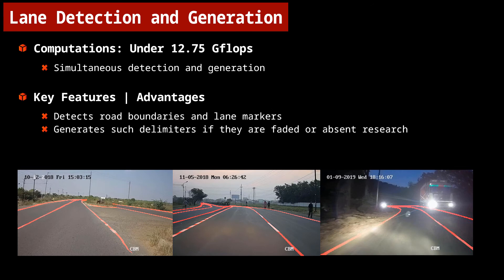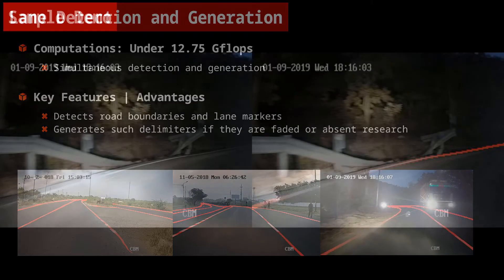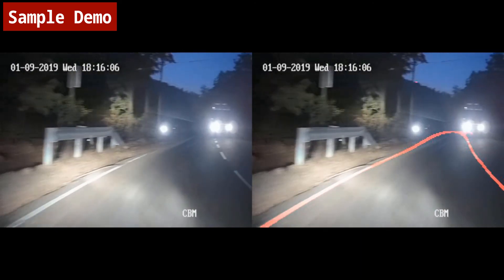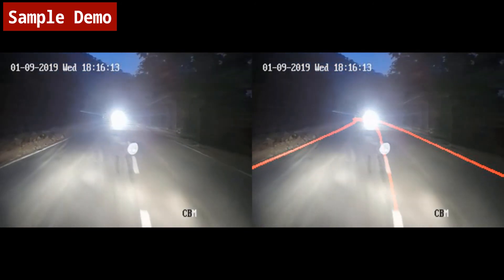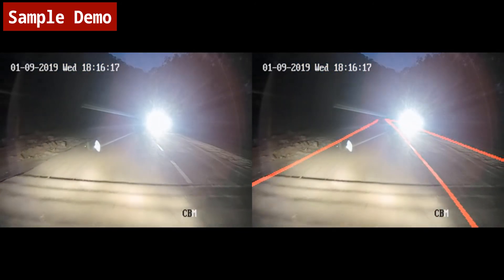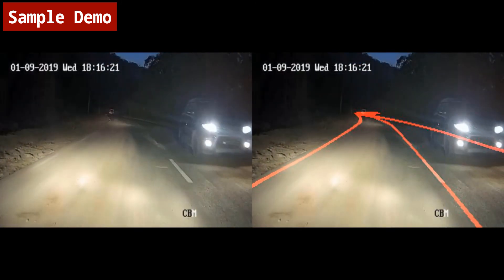Our algorithm is an end-to-end deep neural network, is highly computationally efficient, requiring only under 13 gigaflops per image for simultaneous detection and generation. It detects road and lane delimiters if they exist, and automatically generates them where they ideally should have been via contextual understanding of the environment. Below are some sample images showing it working. Here's a sample demo of our algorithm working at night on our autonomous vehicle. Even when the lane markers and road boundaries are not clearly visible, our algorithm is able to generate them where they ideally should have been.